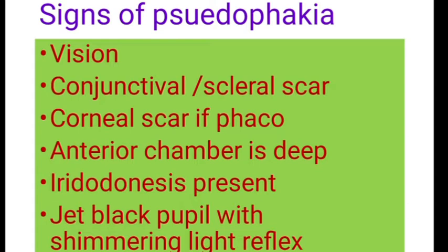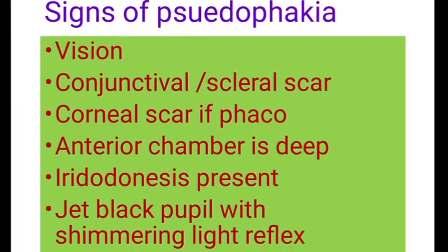When you examine the patient and check the vision, if the surgery was uneventful with the intact posterior segment, the patient will have 6/6 or 6/9 vision. But if there are any complications, the patient's vision can be decreased. The next sign you will see is when you examine the conjunctiva or the sclera.